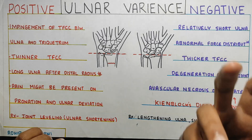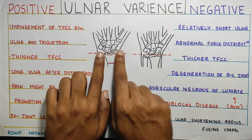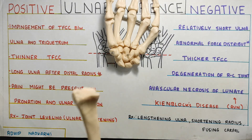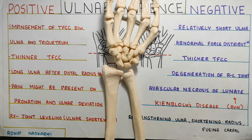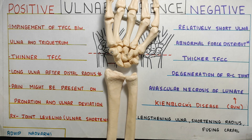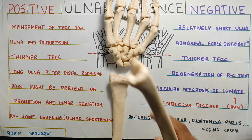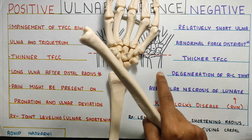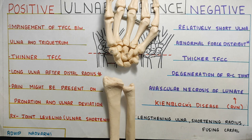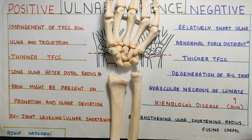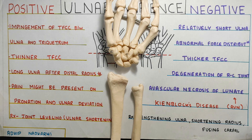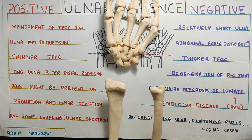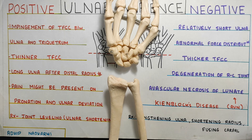Starting with ulnar variance, in simple terms, it refers to the position of your ulna shifting in comparison to your radius. If we take our bones — radius here and ulna here — in ulnar variance, if the ulna is too high compared to the line of the non-styloid part of the radius, that is positive ulnar variance. If it is too low, that is negative ulnar variance. Normally they are at the same level, or the ulna can be slightly lower.